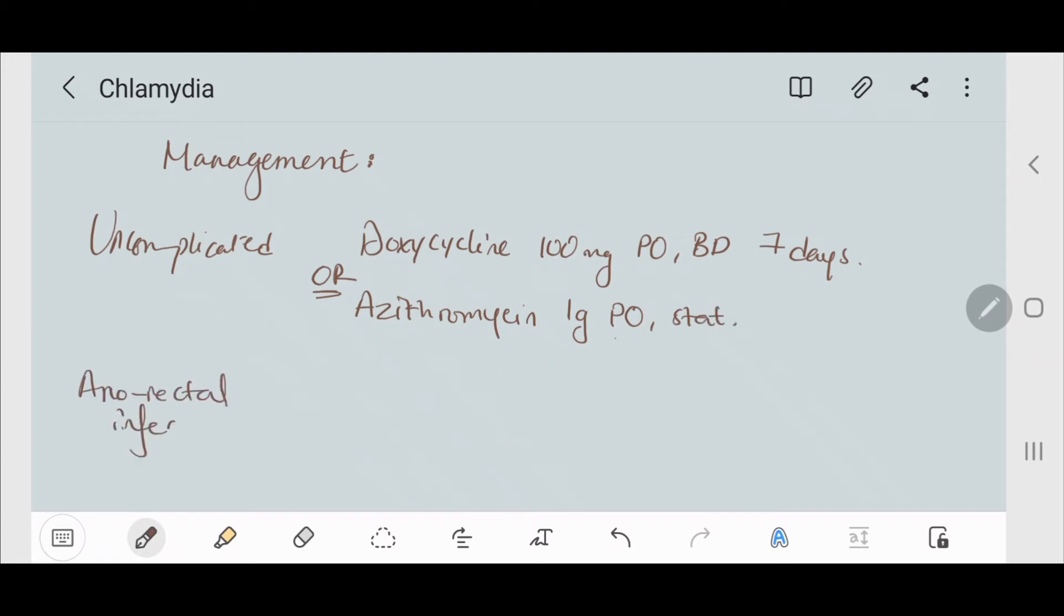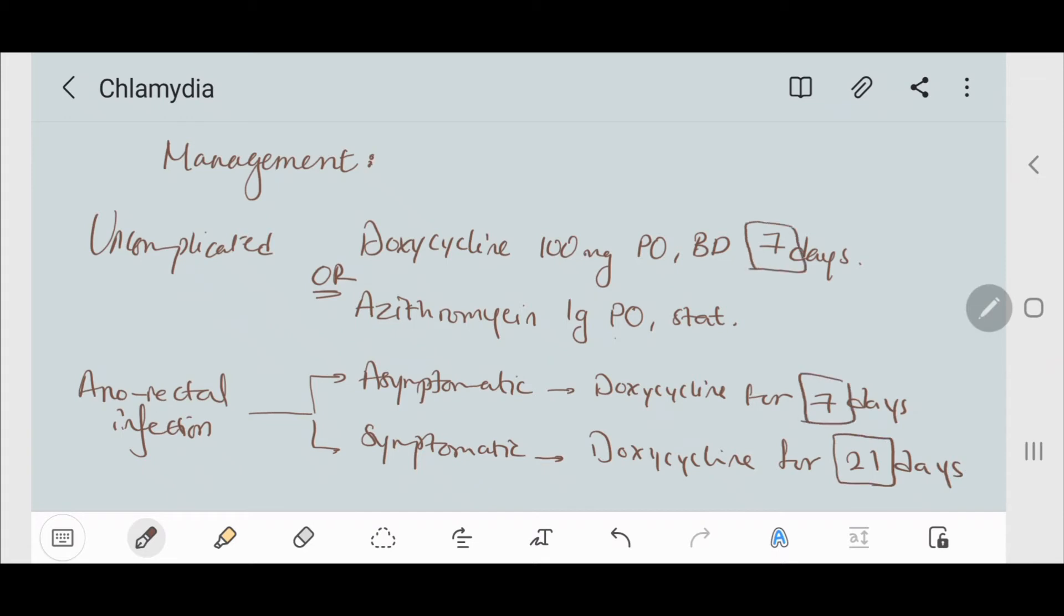In cases of anorectal infection, we can divide them into asymptomatic and symptomatic. If the patient is asymptomatic, what we can use is doxycycline 100 mg orally twice a day for seven days. But if the patient is symptomatic, then we use doxycycline 100 mg orally twice a day for 21 days.